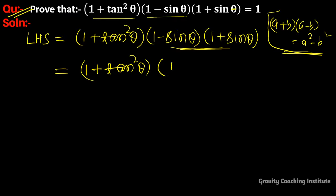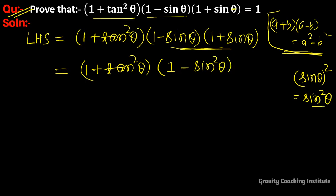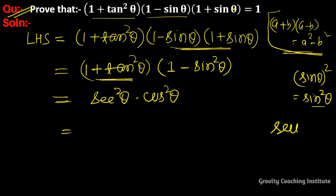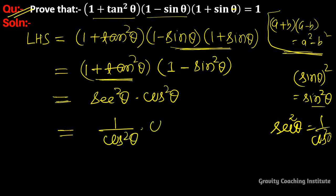1² minus sin²θ equals (1 - sin²θ), which is cos²θ. So (1 + tan²θ) equals 1 upon cos²θ, which is sec²θ. Multiplying, the cos²θ cancels.